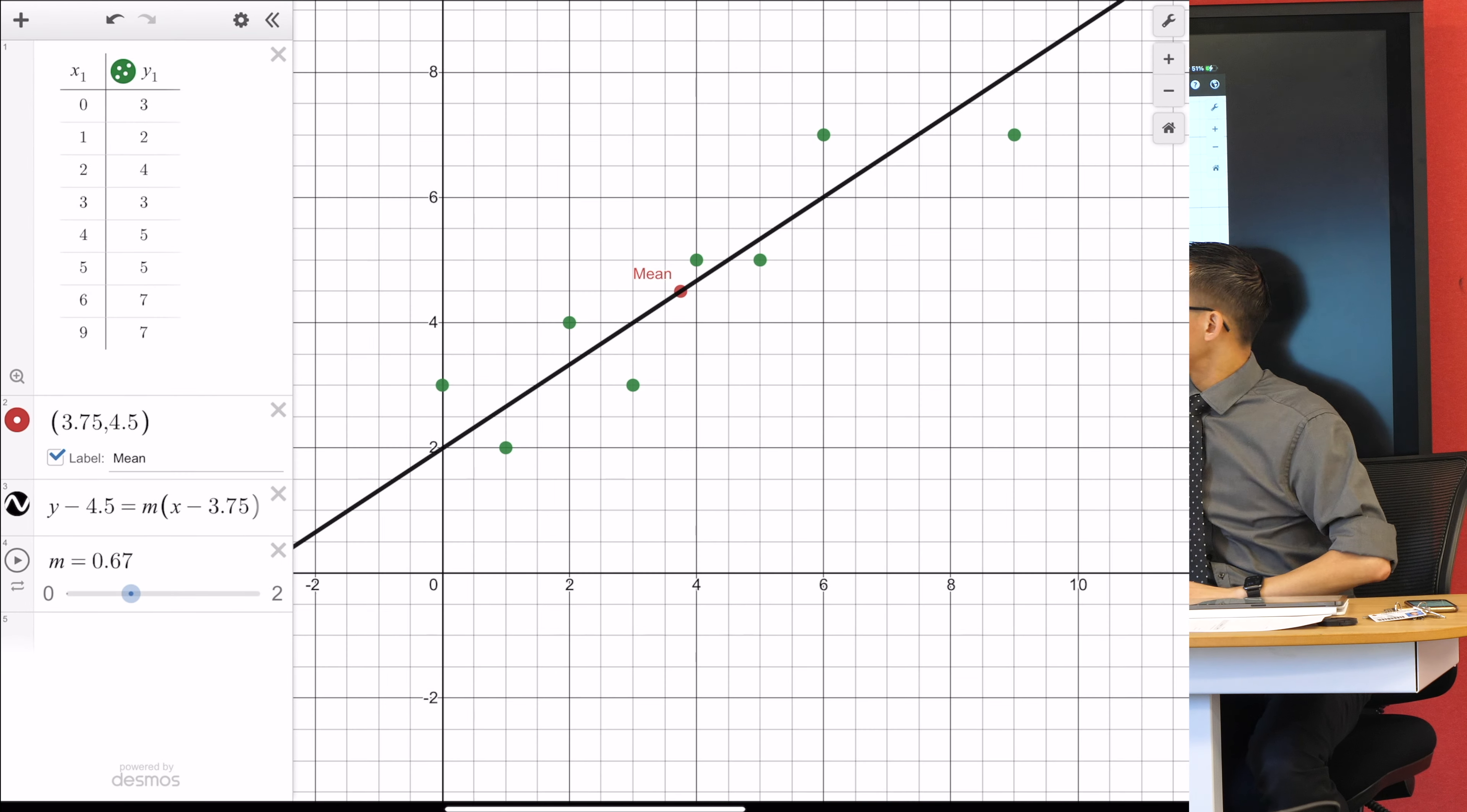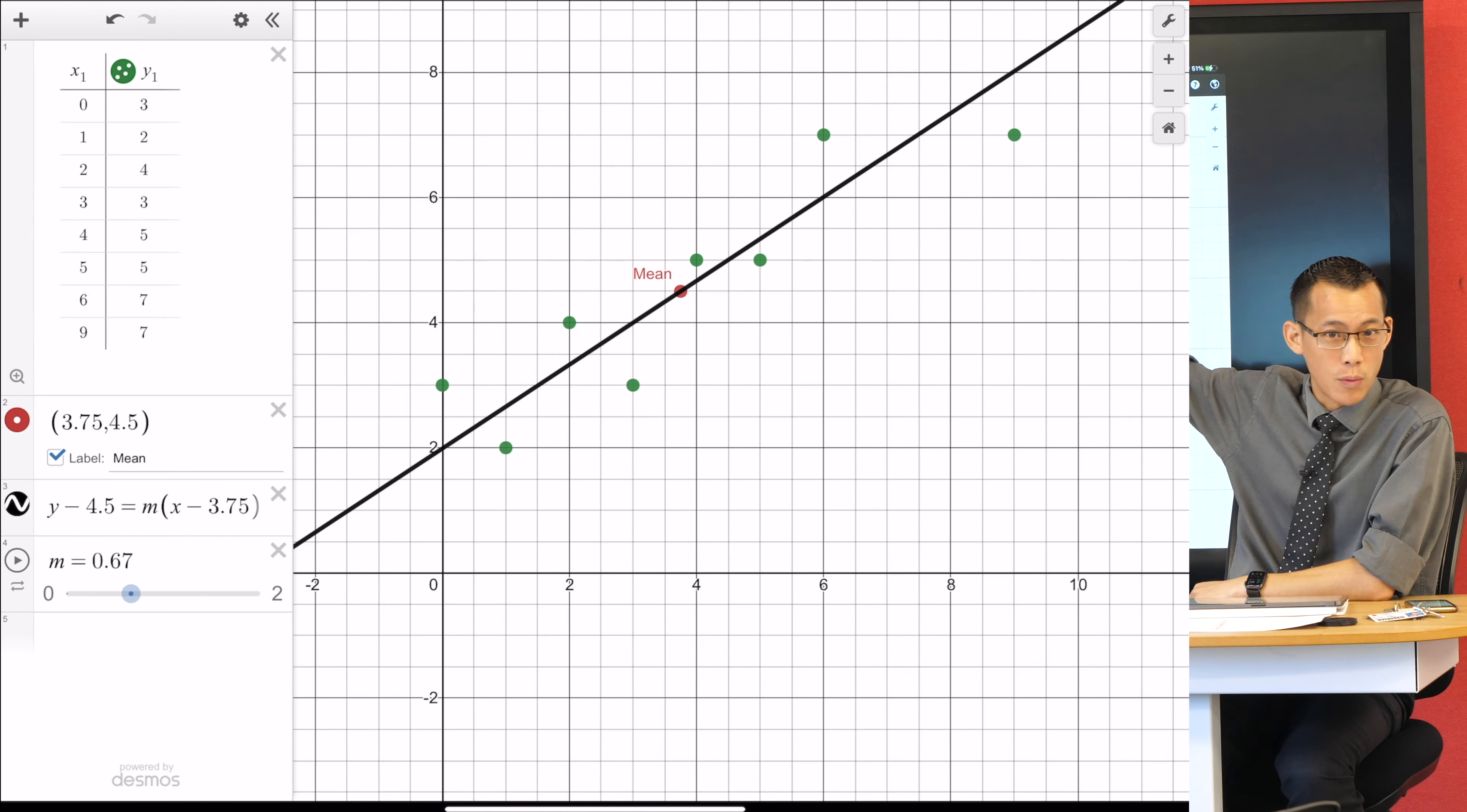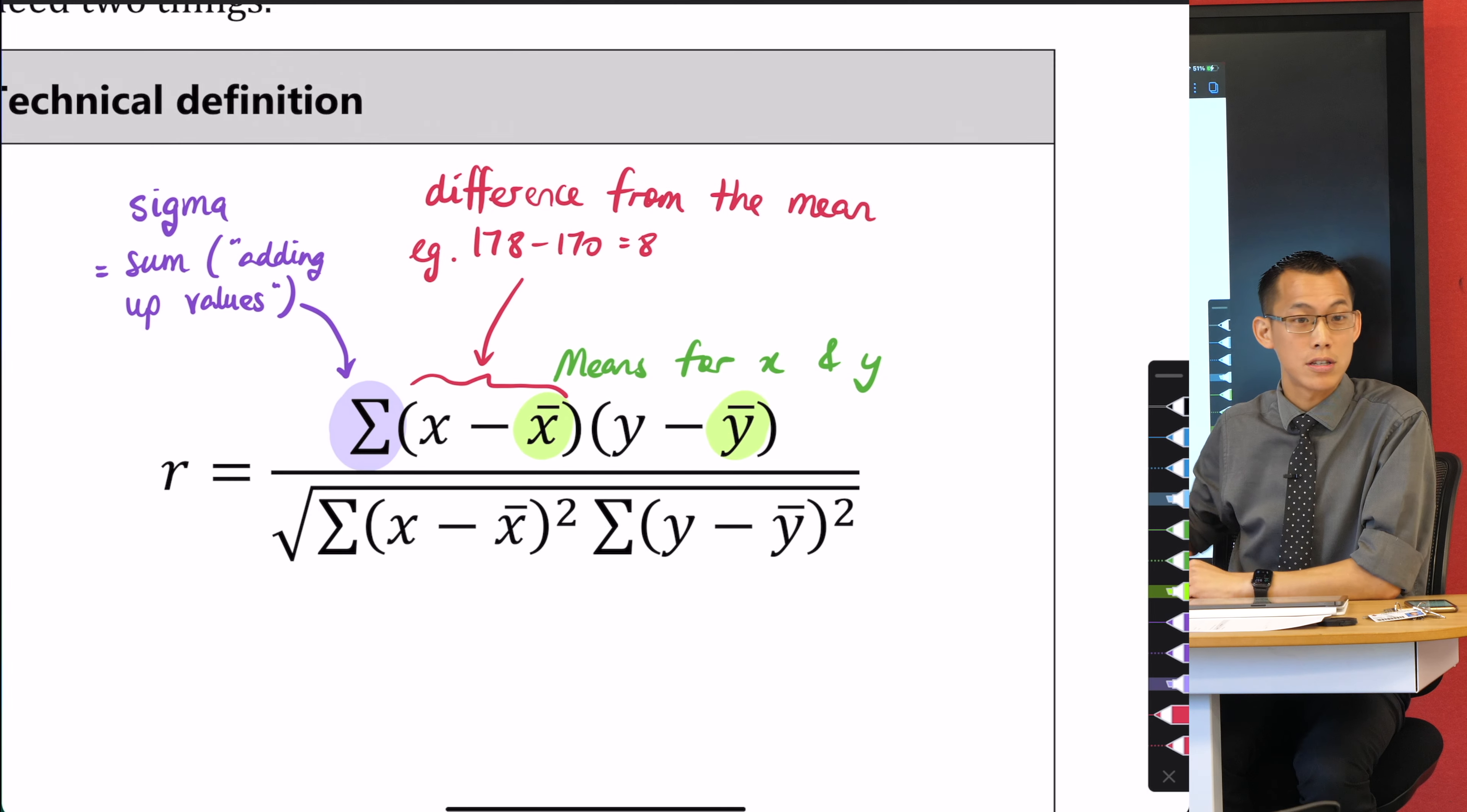If your correlation coefficient is low, that means things don't go close to where this is. Does that make sense? If your correlation coefficient is close to one, that means everything is skewing very close to the line. You see how what we calculated on our numerator is going to help? Does that make sense?